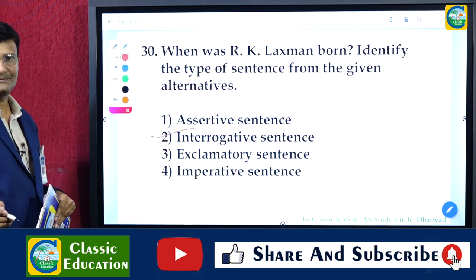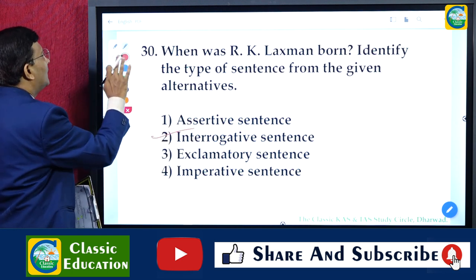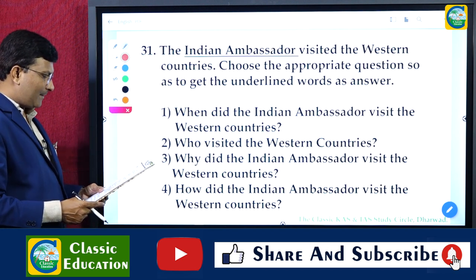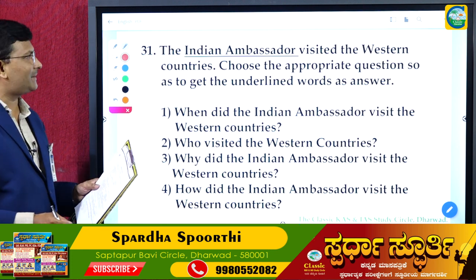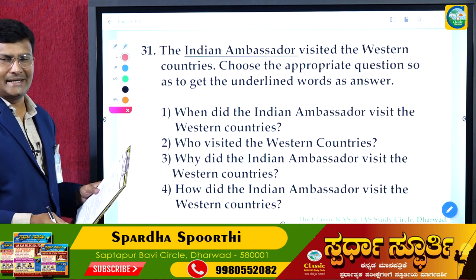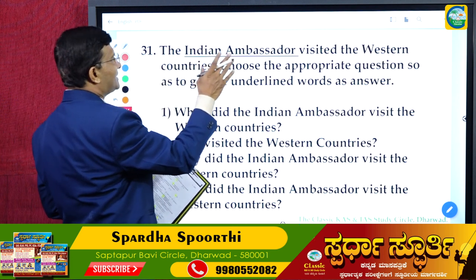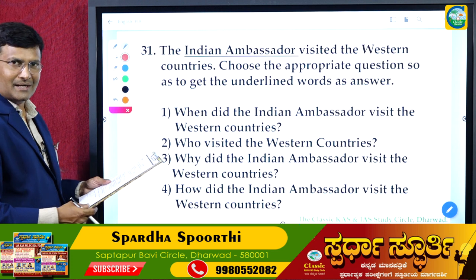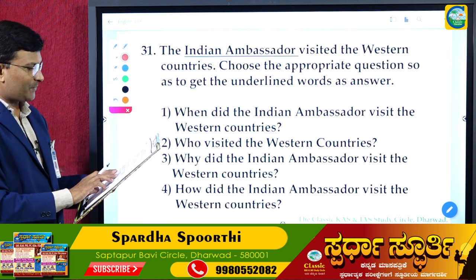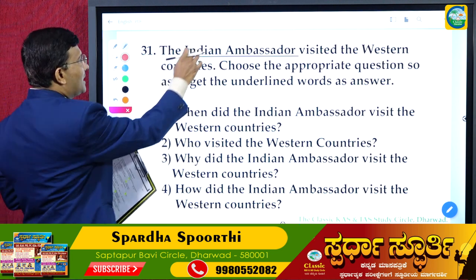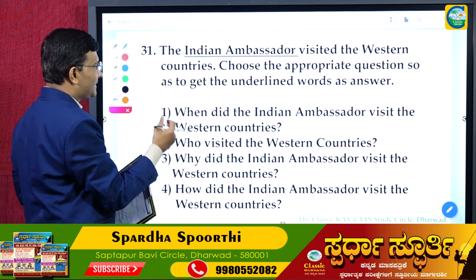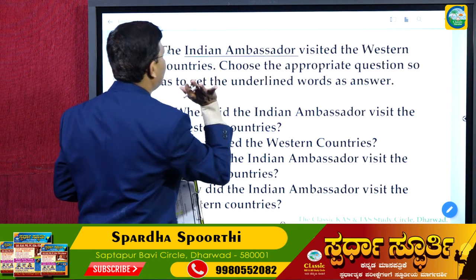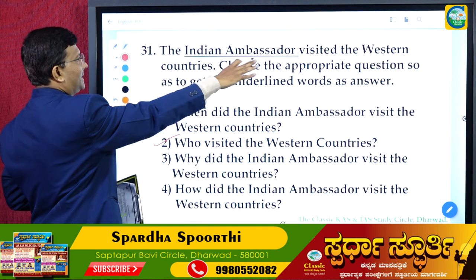Question 31: 'The Indian ambassador visited the Western countries.' Choose the appropriate question to get the underlined word as the answer. The Indian ambassador visited the Western countries — to find out who visited, the question is: 'Who visited the Western countries?' The answer is the second option: 'Who visited the Western countries?'